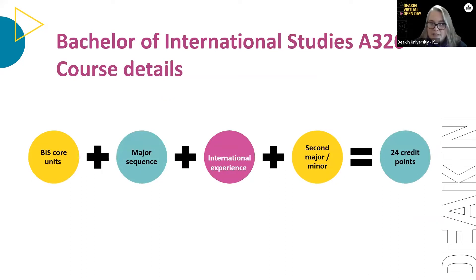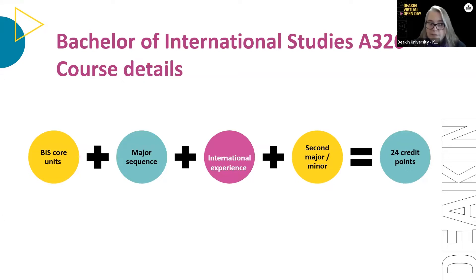For the Bachelor of International Studies, students must successfully complete 24 credit points of study including six core units, an eight-point major selected from the major sequence, international experience, and a second major or minor. The A326 degree is the most flexible course in the suite, offering the option to study a second major or minor sequence and the most elective units of all International Studies degrees.